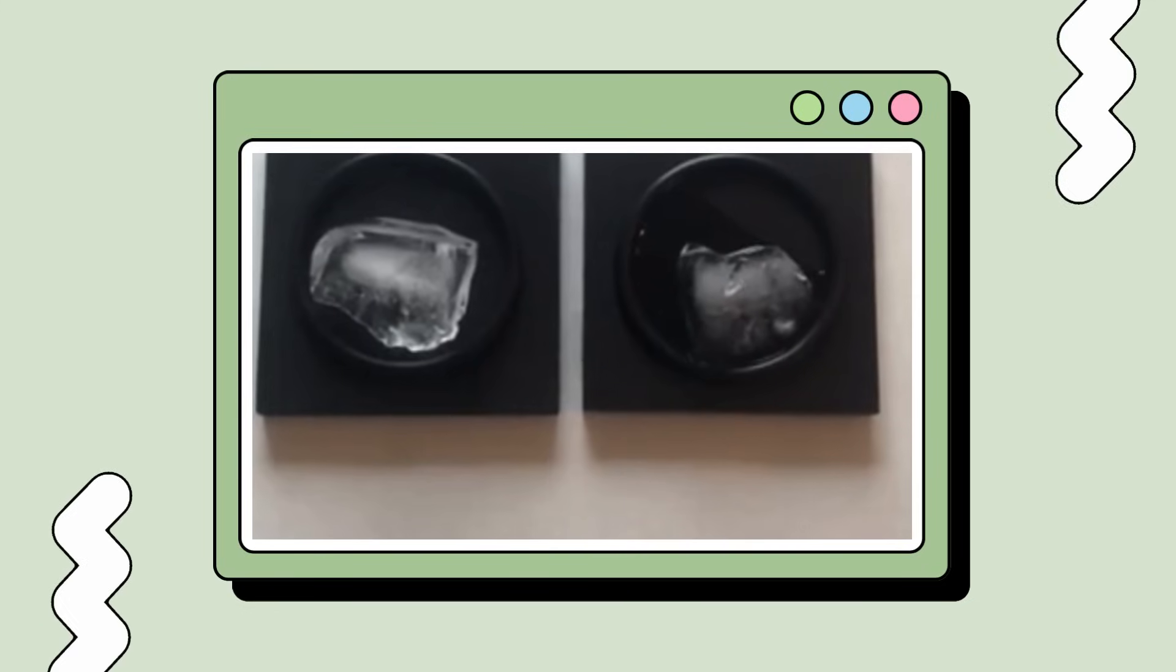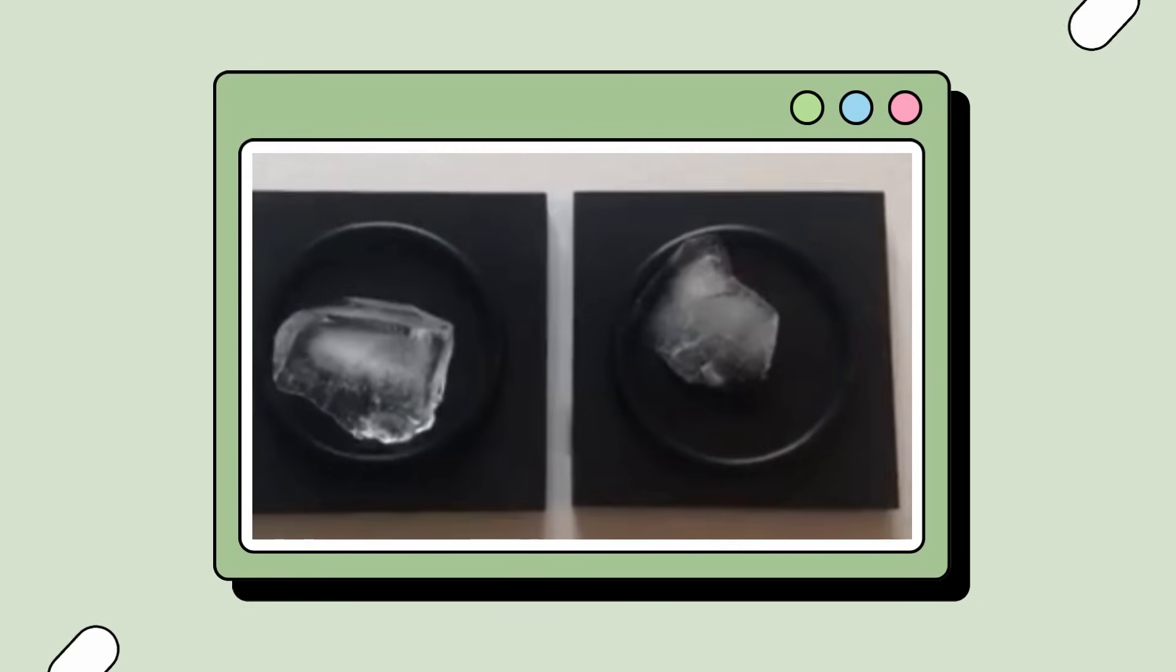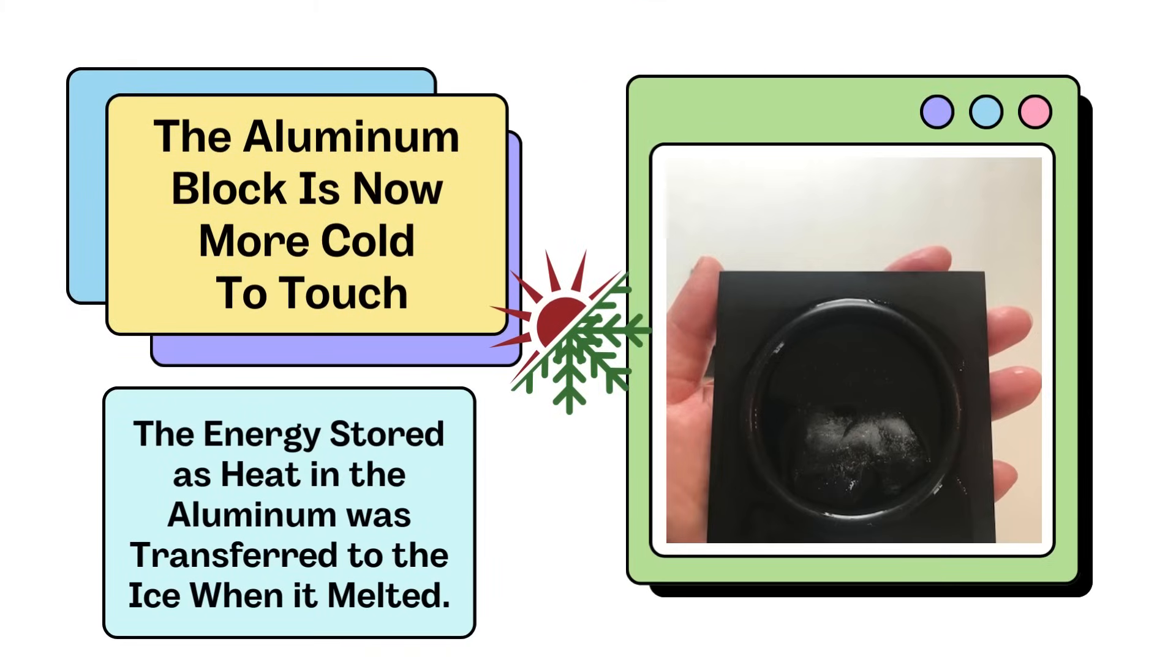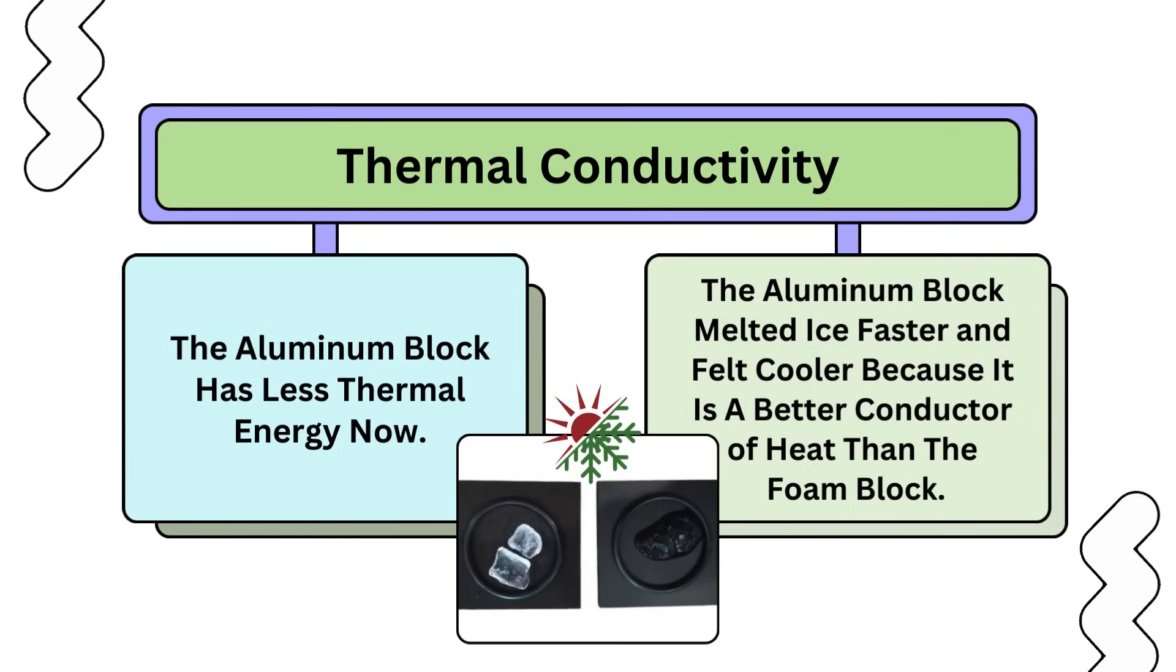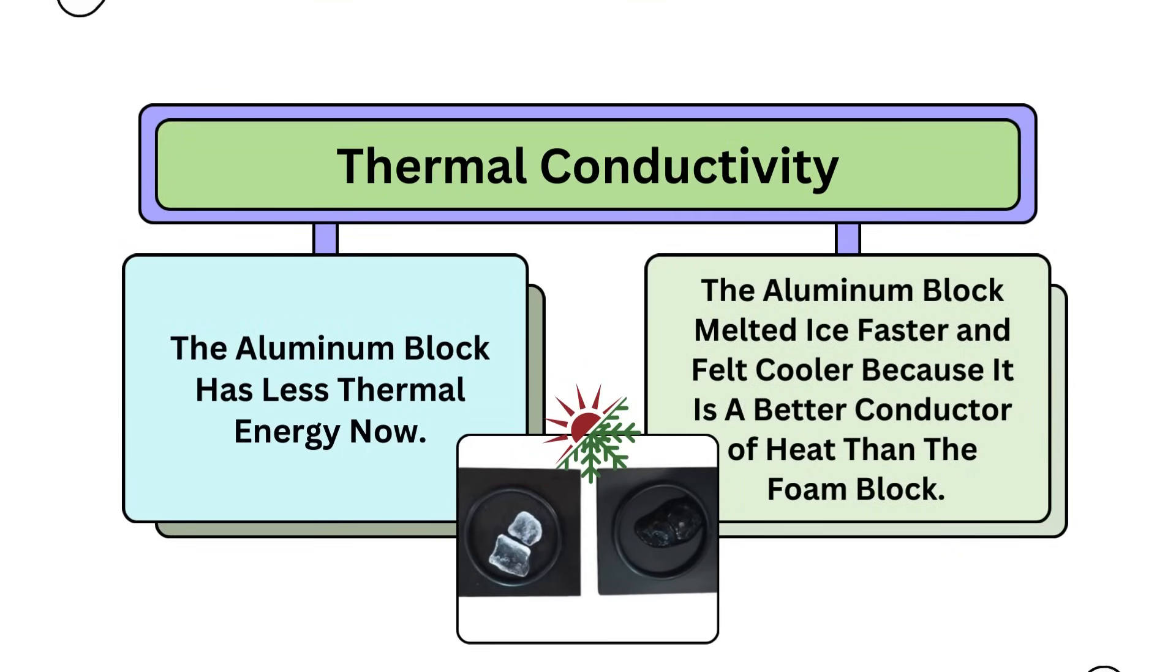The energy stored as heat in the aluminum block was transferred to the ice when it melted. The aluminum block has less thermal energy now. The aluminum block melted ice faster and felt cooler because it is a better conductor of heat than the foam block.